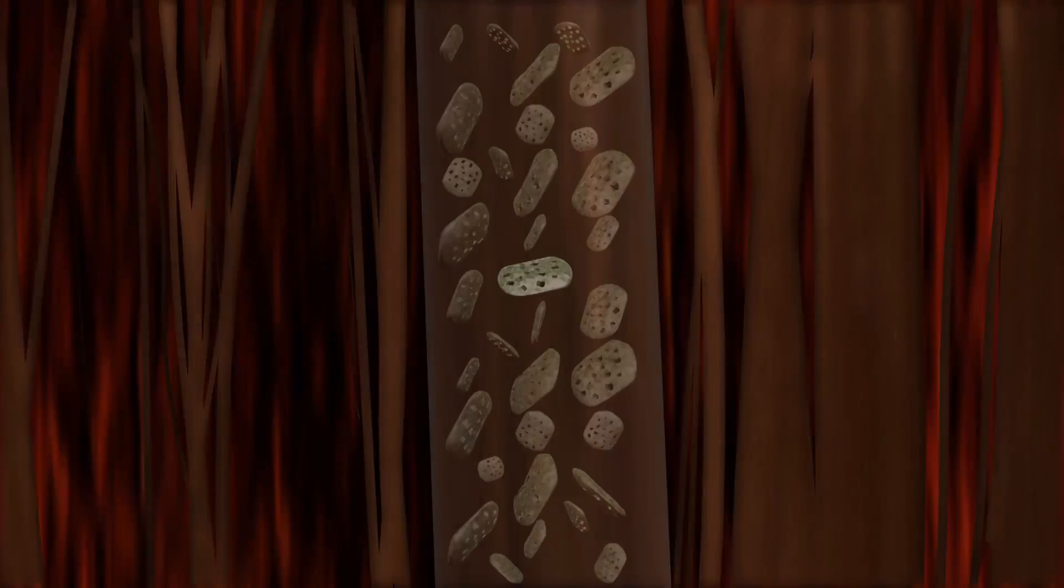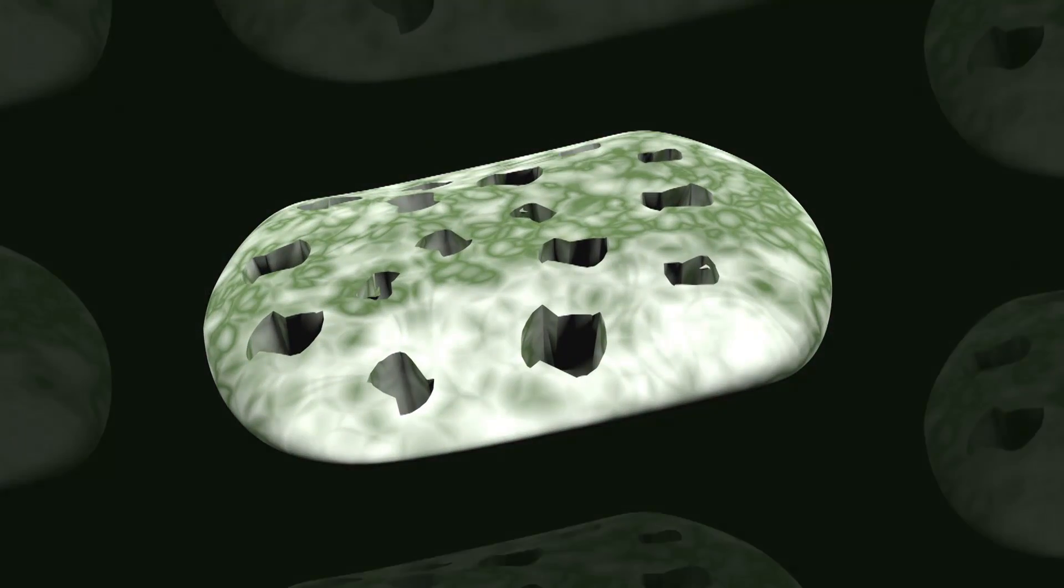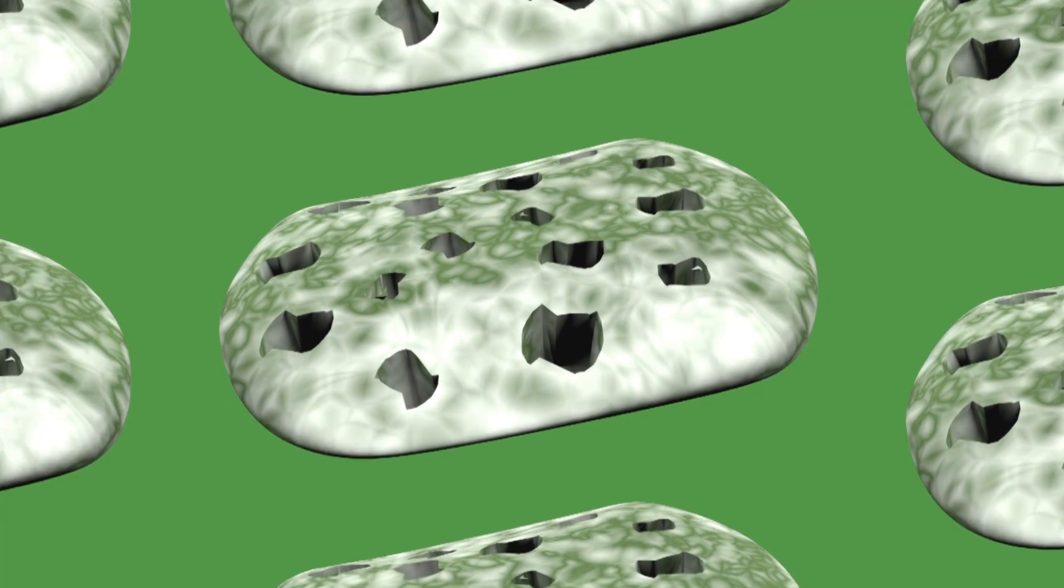The secret to Kokona's success is the unique pore structure within its yarn, which increases the fabric surface area by eight times. This means that any moisture which comes into contact with the fabric spreads out further and quickly evaporates.